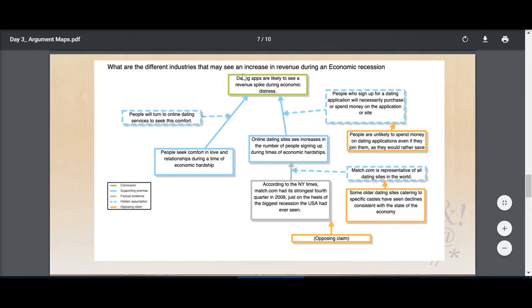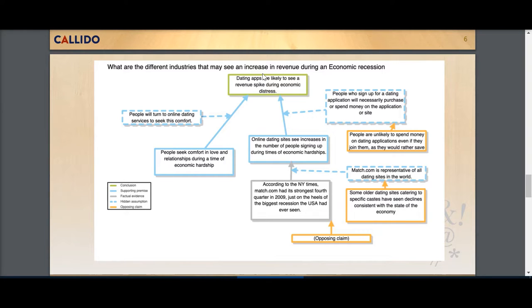Look at this argument I have here about different industries that may see an increase in revenue during an economic recession. This green box is the conclusion which says dating apps are likely to see a revenue spike during economic distress.